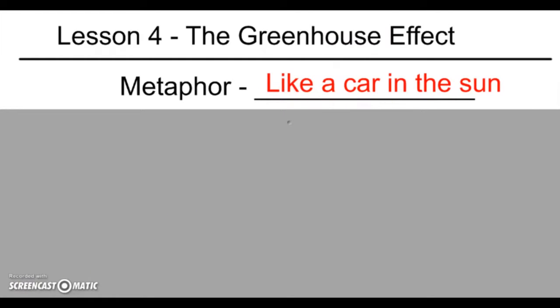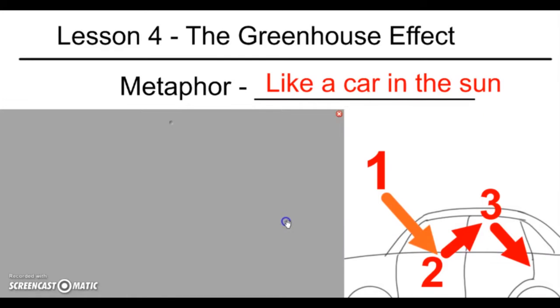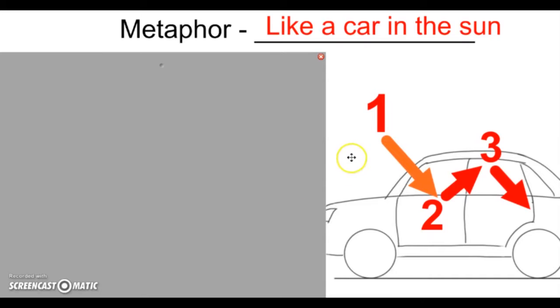The greenhouse effect is like a car in the sun. So everyone's gone to a car in the middle of summertime, walking up to their car and dreading it because they know when they open the door it's going to be crazy hot inside. So if the greenhouse effect is like a car in the sun, let's have a diagram of that. Here's a car. We're going to break this into three steps: one, two, and then three is the bouncing of these arrows. So step one.